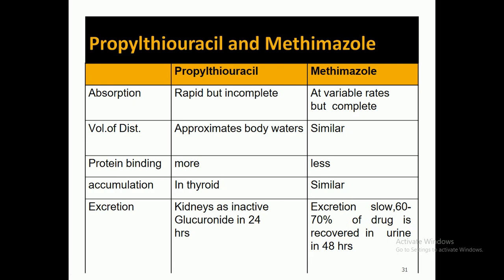Comparing propylthiouracil and methimazole: propylthiouracil absorption is rapid but incomplete, while methimazole absorption is at variable rates but complete, making methimazole more potent. The volume of distribution of propylthiouracil is approximately body water, and methimazole is similar, meaning both distribute throughout body water.